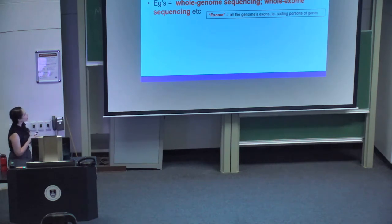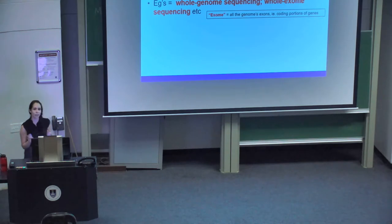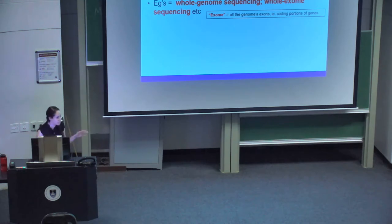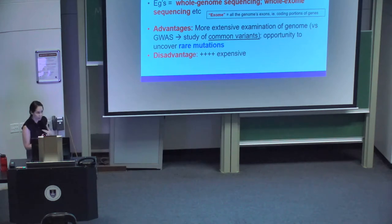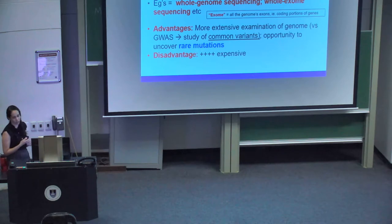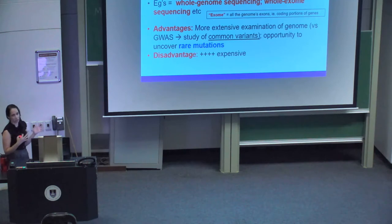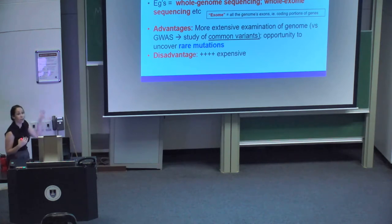Next generation sequencing, also called high-throughput sequencing, differs from the microarray approach in that the entire genome is sequenced — no selection, no a priori gene identification. The advantages are that it's the most comprehensive type of genetic analysis possible, enabling new gene discovery and identification of rare mutations. The major and almost prohibitive disadvantage is cost: in some studies in our department of psychiatry, we only have funding to sequence about 300 people, whereas these studies really should target thousands.